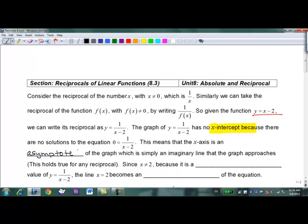An asymptote of the graph is simply an imaginary line that the graph approaches so it gets really really really really close.